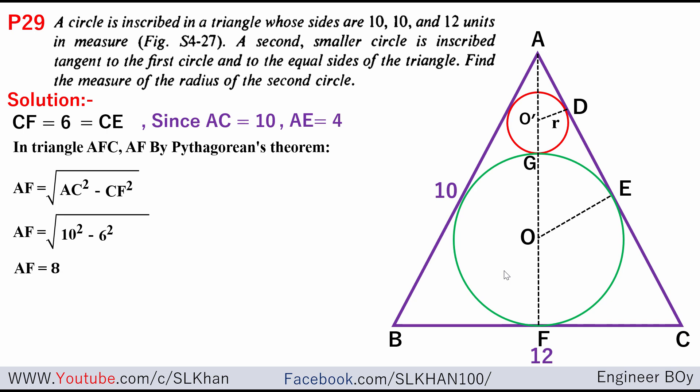Now triangle AEO and triangle AFC are similar, which means FC by OE equals AF by AE. By putting the values of FC, AF and AE, we can get OE, which is going to be 3 units.